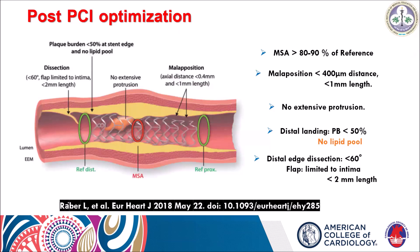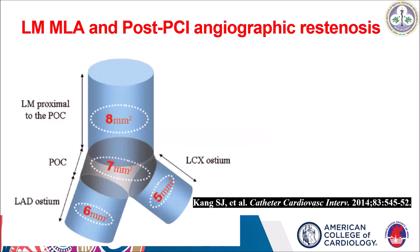Standard imaging definitions should be followed for left main stenting to identify significant dissection, plaque protrusion, and malapposition. A study by Kang SJ demonstrated that risk of restenosis increases when the post-stent area is less than 5 mm² at the LCX, less than 6 mm² at the LAD confluence, less than 7 mm² at the ostium, and less than 8 mm² at the left main. Therefore, targets of more than 5, 6, 7, and 8 mm² respectively should be achieved at the left main bifurcation for favorable outcomes.